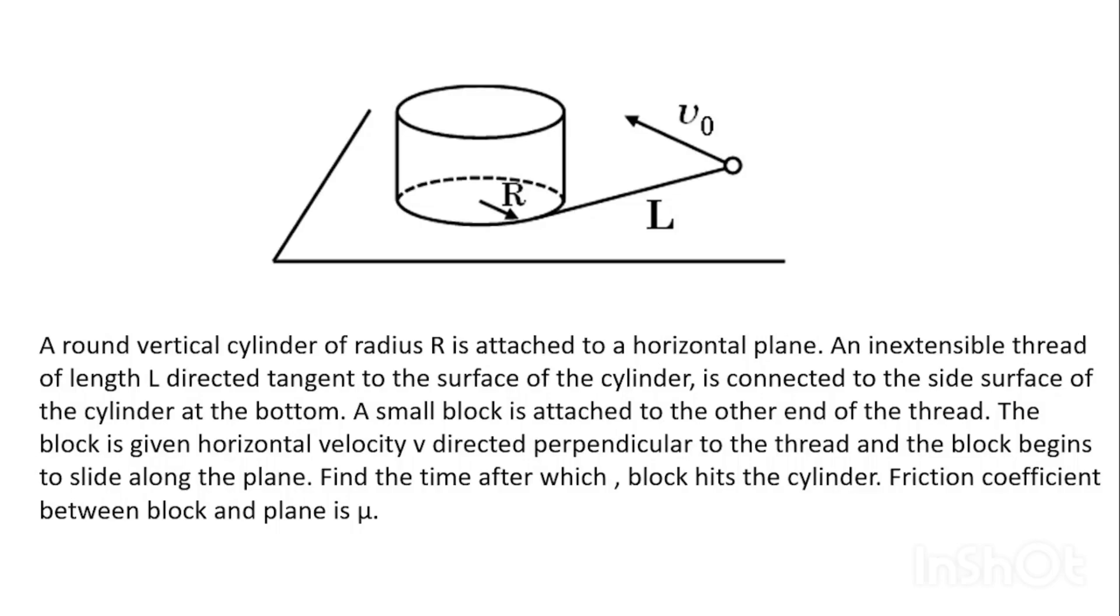Welcome back, dear students. Today we are going to discuss another problem of the pre-score test series, paper 2. The question says that there is a round vertical cylinder of radius R which is attached to a horizontal plane. An inextensible thread of length L directed tangent to the surface of the cylinder is connected to the side surface of the cylinder at the bottom. A small block is attached to the other end of the thread. The block is given a horizontal velocity v directed perpendicular to the thread and the block begins to slide along the plane. Find the time after which the block hits the cylinder. Friction coefficient between block and the plane is μ.